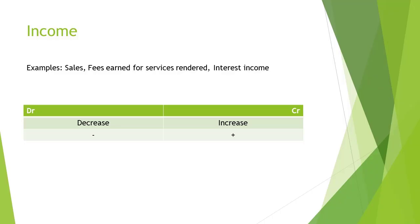All businesses aim to earn income and in the end to make a profit. Examples of income that a business can earn include the sale of inventory, fees earned for services rendered, interest income, and many more. An income account increases on the credit side and decreases on the debit side.